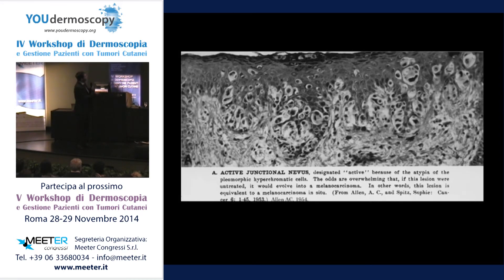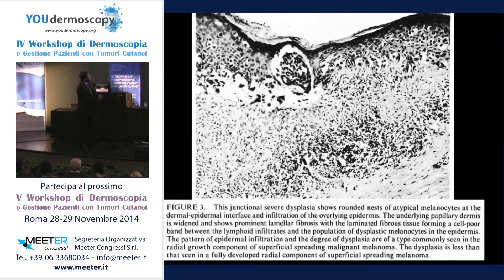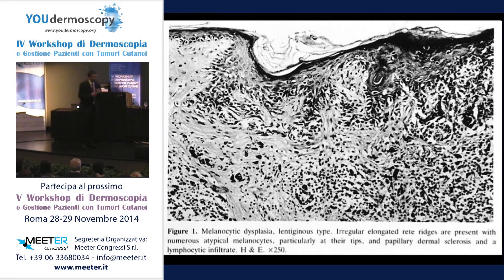From 1953: 'active junctional nevus' by Elm — the husband of Sophie Spitz. What is this? Of course, melanoma in situ. Atypical melanocytes, melanotic freckle of Hutchinson — diagnosed not as melanoma. Of course it's melanoma now. In textbooks: 'severe dysplasia' — in reality it's a melanoma. And here, 'melanocytic dysplasia' in the 1970s — now we diagnose this as melanoma. So there was a large period of underdiagnosis, clinically and histopathologically.